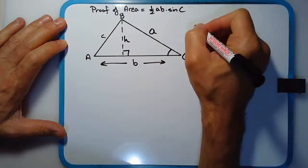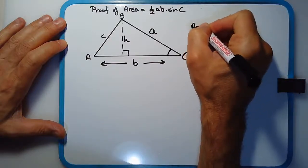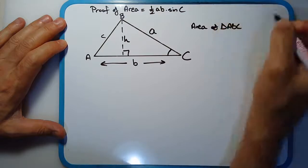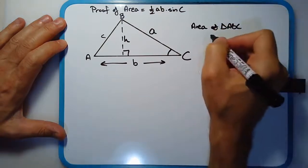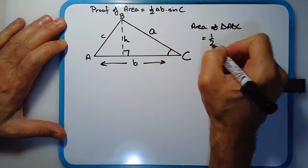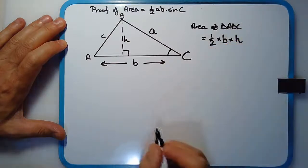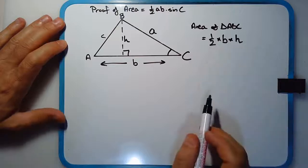But let's start off. What we do know is that the area of triangle ABC is in fact given by half base times height. So half times the base times the height. So this is something that's been established some time ago.